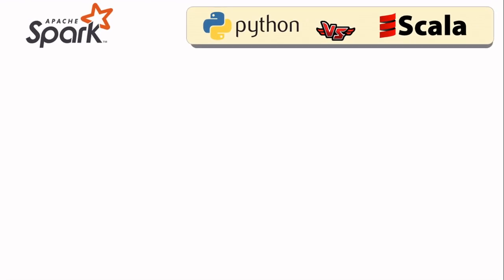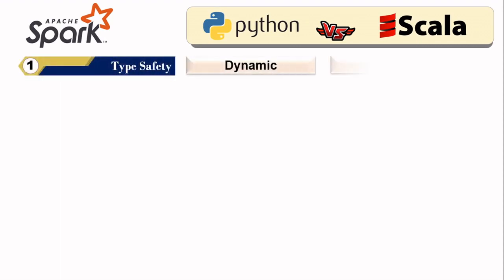The first topic is type safety, which means if you declare a variable in a programming language, it should mention the type of the data — like integer, string, float, etc. Python can do it dynamically, while Scala does it statically.